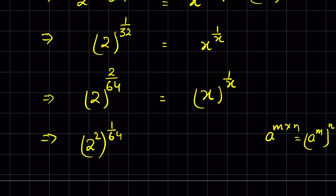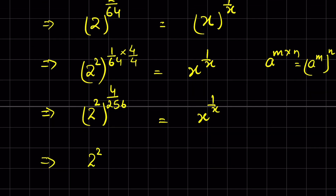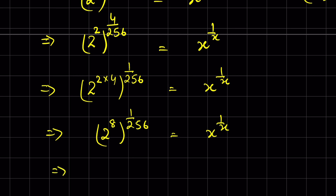This equals x raised to the power 1 upon x. Now if we multiply the numerator and denominator by 4, we get another equivalent fraction, and this can be written as 2 raised to the power 2, whole raised to the power 4 upon 256, equal to x raised to the power 1 upon x. Or this is 2 raised to the power 2 times 4, whole raised to the power 1 upon 256, which is 2 raised to the power 8, whole raised to the power 1 upon 256, equal to x raised to the power 1 upon x.